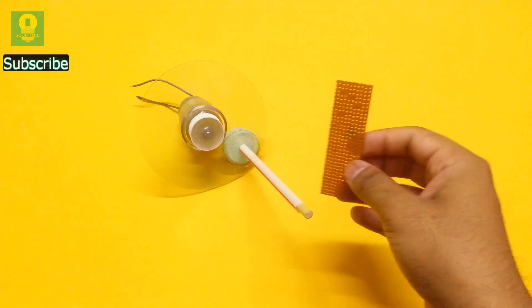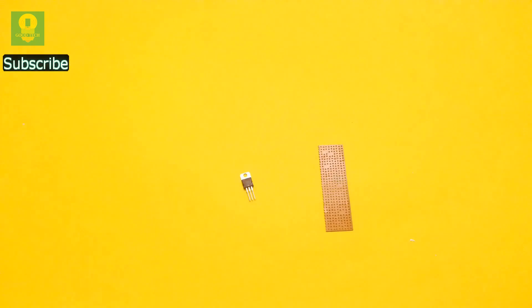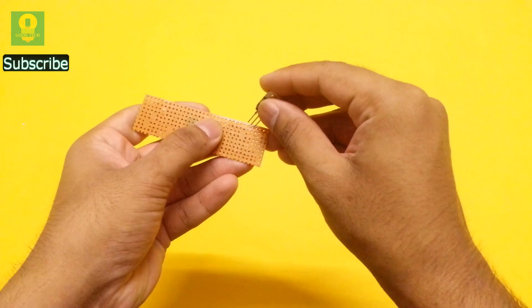It is now time to make a USB charging circuit. Take a small piece of general purpose PCB board and a 7805 voltage regulator IC. Insert and solder the IC on the PCB.